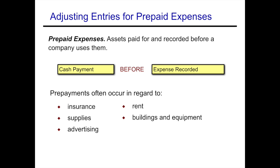Prepaid expenses are assets that you have paid for and recorded before a company actually uses them. The cash payment happens before the expense is actually recorded. Some examples are insurance, rent, supplies, buildings and equipment — which is an example of a prepaid because as you use it up you're recording depreciation — and advertising.